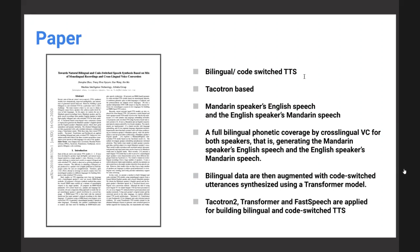They get a kind of bilingual data and from that they train their system. They also do data augmentation by adding some translated words to the corpus and generating speech for those particular words. Code-switching deterrents are also added, and they make use of existing speech synthesis methods like Tacotron by Google, Transformer-based models, and FastSpeech by Microsoft, connecting these to make this one single system possible.